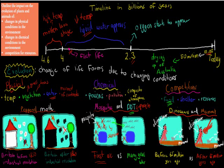We had chemicals — so for example poison, pollution, and composition of the atmosphere — and how all these chemical things could change the evolution of living things. The example was mosquitoes and DDT. DDT was a poison used to kill mosquitoes, and when first used it was effective and killed all the mosquitoes. But after it was used again it was less effective, because the mosquitoes had become resistant to the poison.